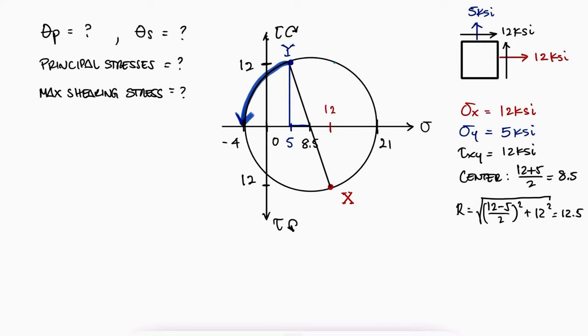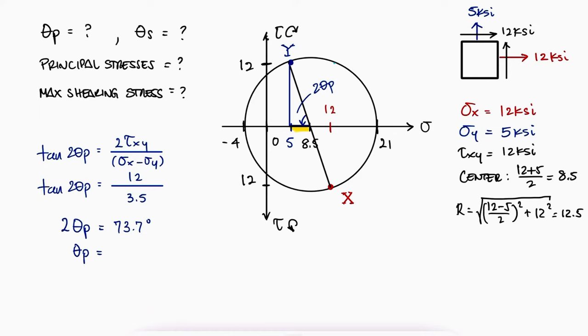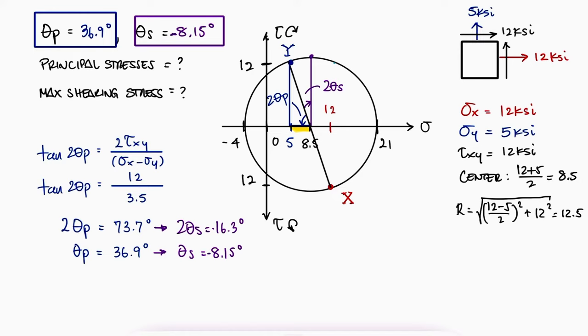For the Y value to become the minus 4 principal stress, the angle theta P can be found by using 12, 3.5 and the tangent function. 2 theta S would be the complementary angle.